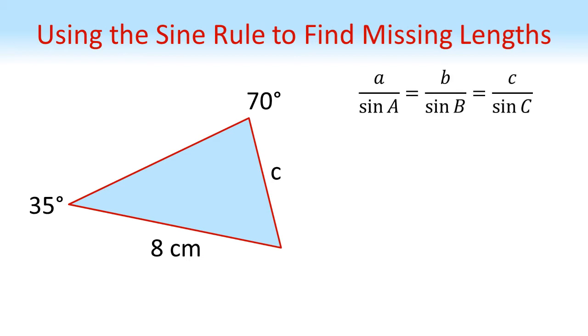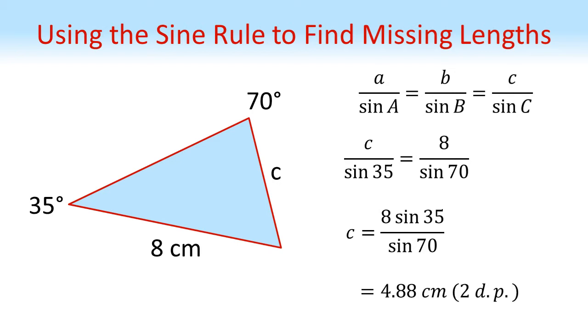So here's the sine rule. Putting our values into this, we get that c over sine 35, which is the opposite angle to c, is equal to 8 over sine 70. Again, 70 is the opposite angle to 8. Multiplying both sides by sine 35 gives us that c equals 8 times sine 35 over sine 70, which equals 4.88 centimeters to two decimal places.